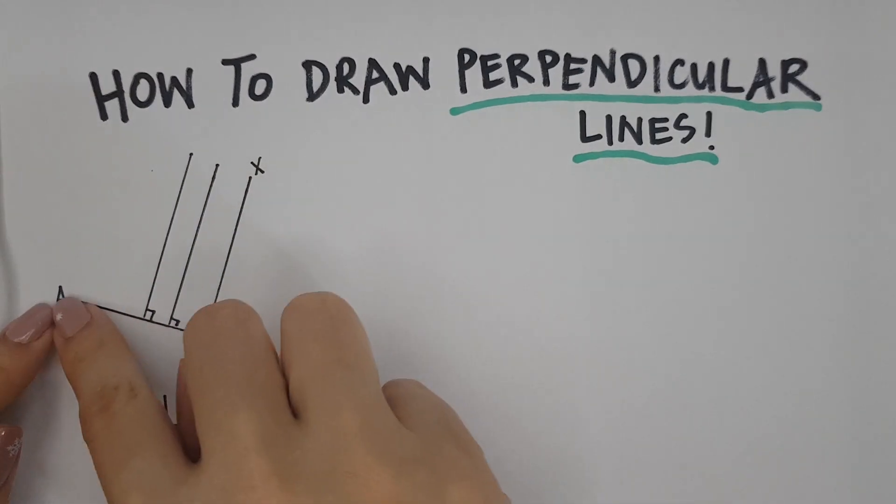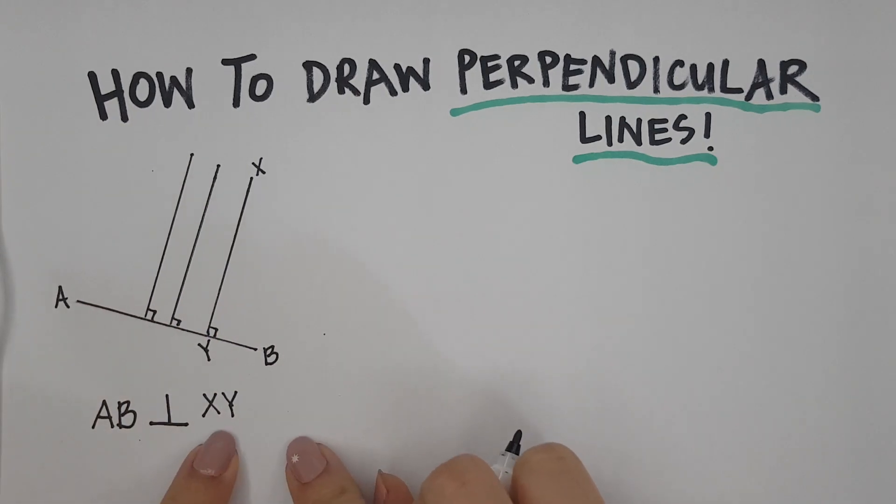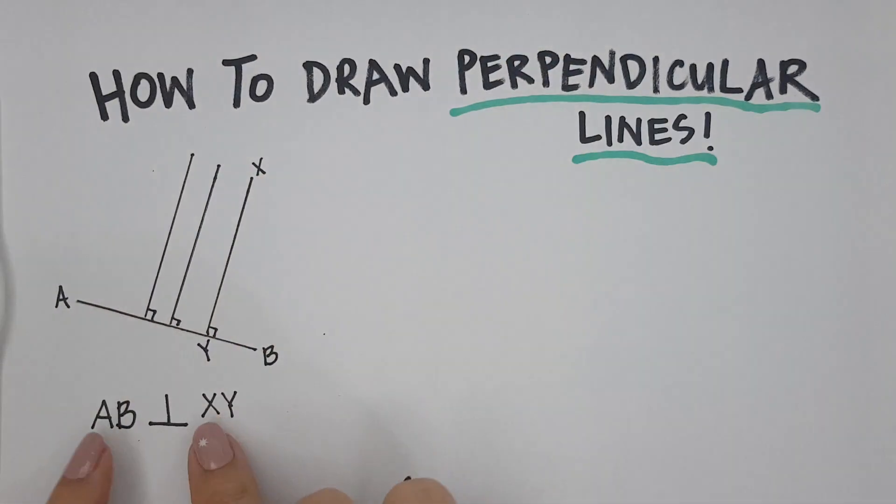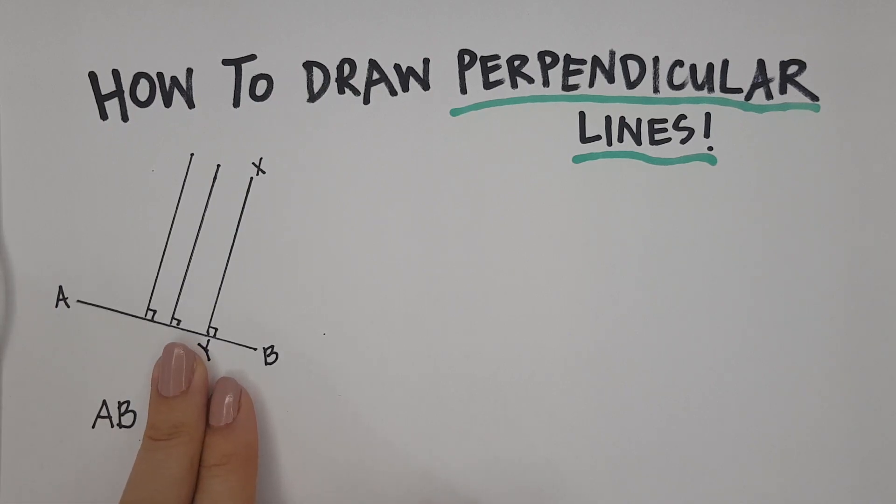AB is a line, this line. And XY is a line, this line. So, this pair, which is two of them, they always come in twos. These two lines are perpendicular. They come in pairs. You cannot say that AB is perpendicular. You need to always tell me AB is perpendicular to another line, which is XY.